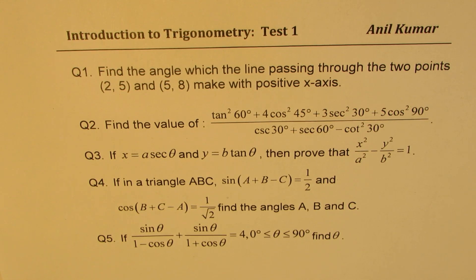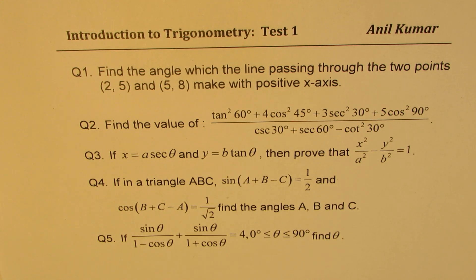Question four: if in a triangle ABC, sin(a + b − c) equals one half and cos(b + c − a) equals 1 over square root 2, find the angles a, b, and c. This question involves solving simultaneous equations.